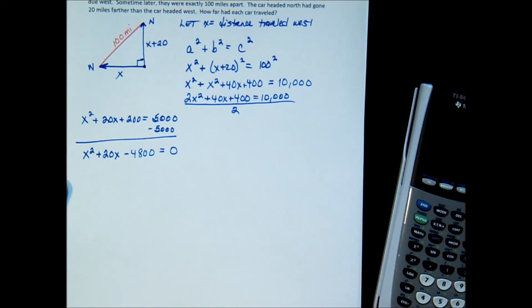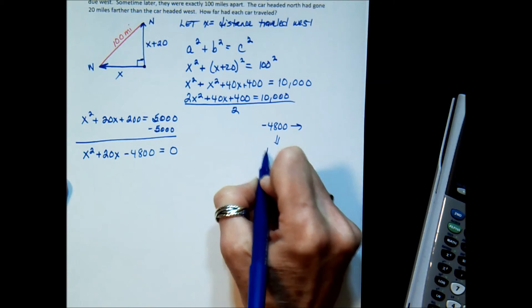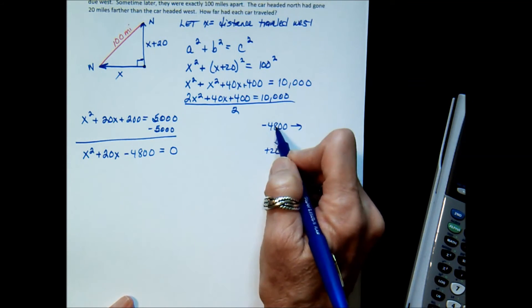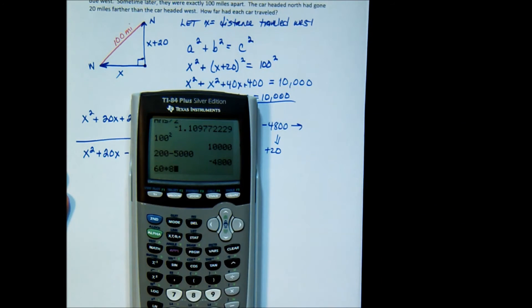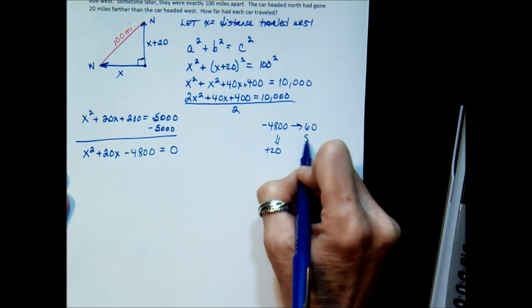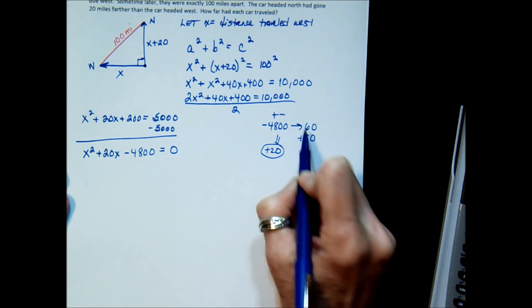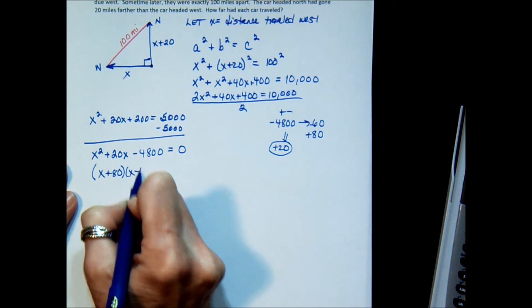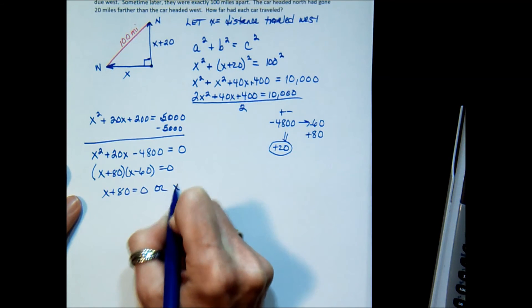Now the question is, is that factorable? So negative 4,800, that adds up to positive 20. Well, I'll tell you a little hint. I know that if this was a 48 and a 2, that I could use 6 times 8. And if I look on my calculator, I know that 60 times 80 is 4,800, and they are 20 apart. So I'm going to use a 60 and an 80. One has to be positive, one negative. But with this being positive, I know the bigger one is positive. So I'm going to have (x plus 80) times (x minus 60) equals 0. Using the zero factor property, x plus 80 equals 0 or x minus 60 equals 0.